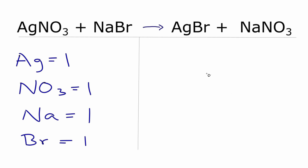Over on the product side, Ag, there is one, and then the NO3s, we have this NO3 right here. NO3, one of those. Na, one, and then the Br, there's just one of those.